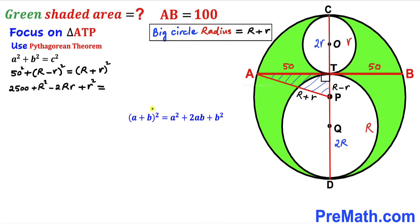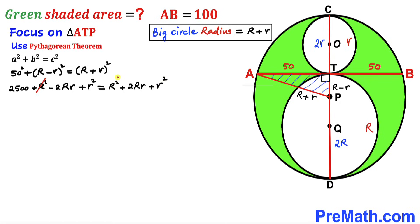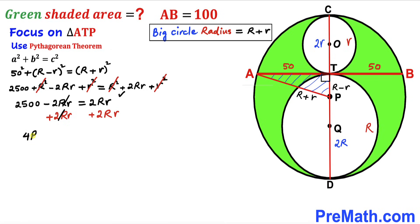Expanding the right side using (a + b)² = a² + 2ab + b², we get R² + 2Rr + r². The R² terms cancel, the r² terms cancel, and combining the Rr terms: 2500 = 4Rr.